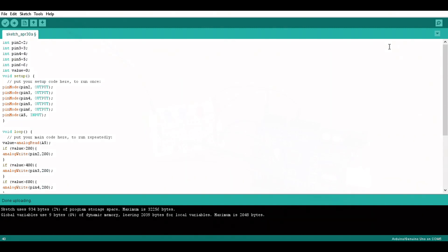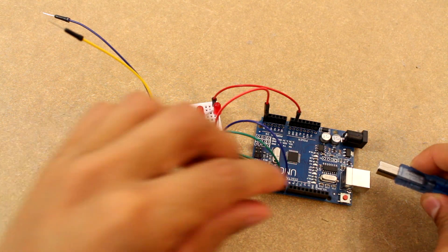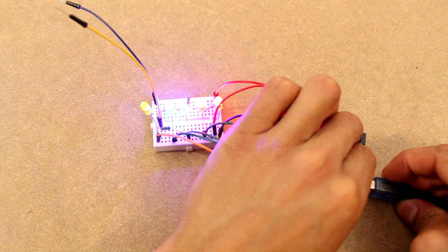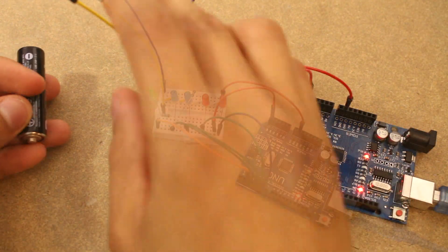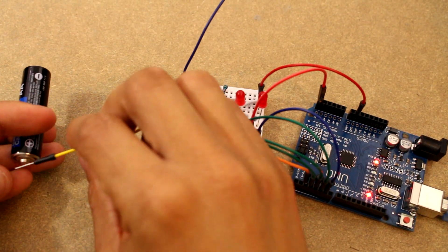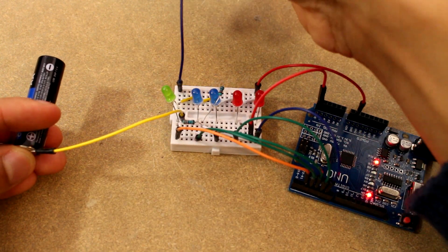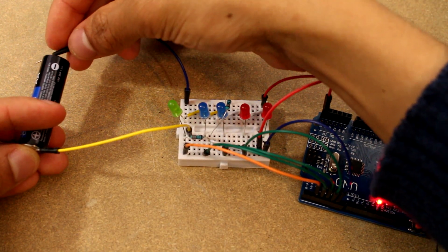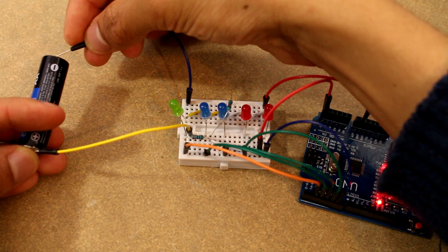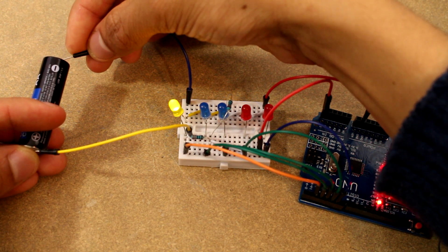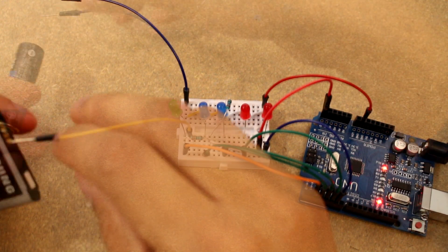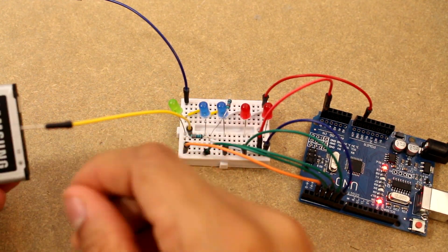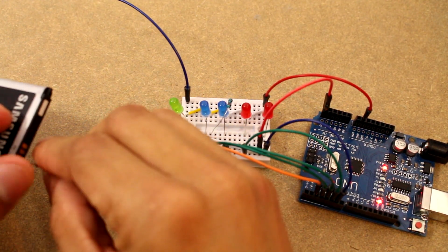So now we can upload the code onto the Arduino and then test out the batteries. And as expected our 1.5 volt battery goes up to the first light. My cell phone battery which is 3.6 volts goes up to the third light.